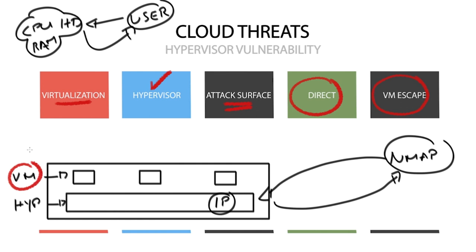We also have what is known as VM escape. The attacker runs code on the VM that allows the operating system to break out and interact directly with the hypervisor. A VM that should be isolated from the host machine and other VMs on the same host now has the potential to access the host machine and other VMs on that same host.